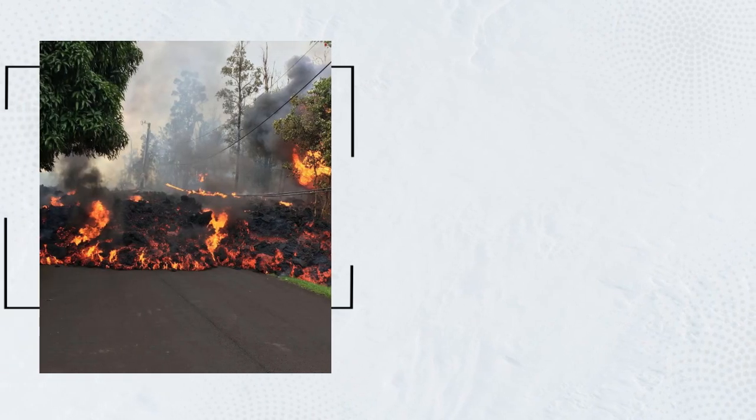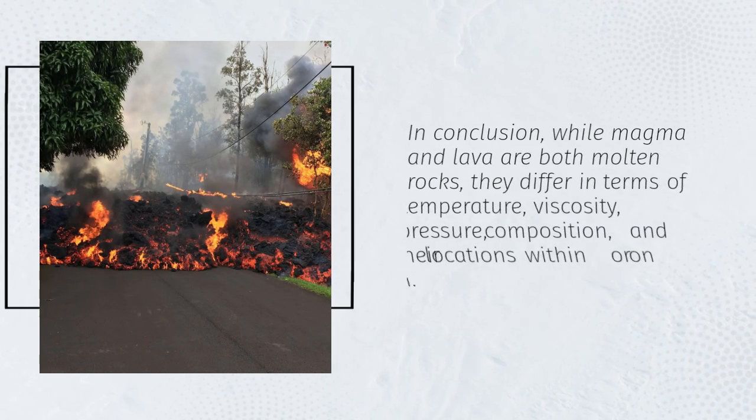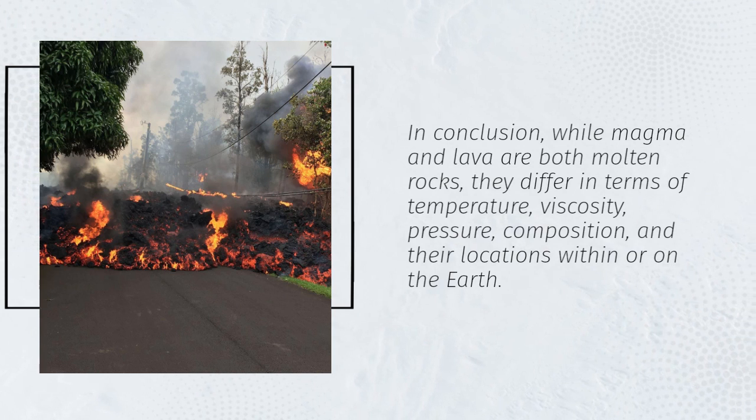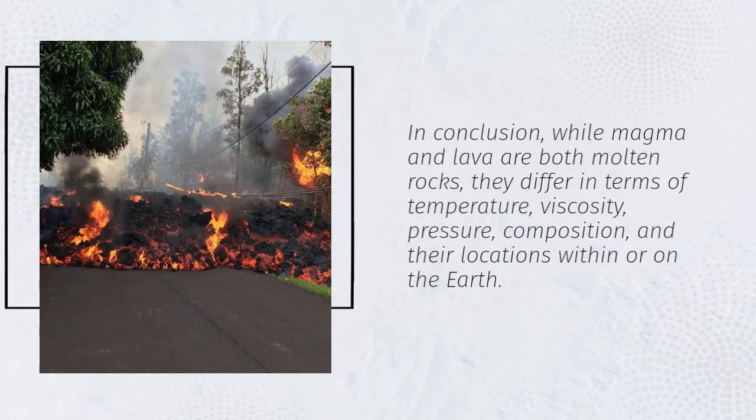In conclusion, while magma and lava are both molten rocks, they differ in terms of temperature, viscosity, pressure, composition, and their locations within or on the earth.